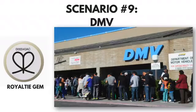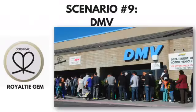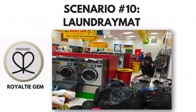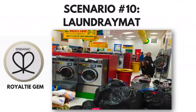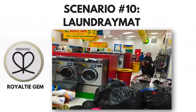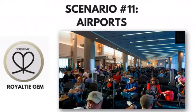The Department of Motor Vehicles is a great spot — people are standing in line waiting for their number to be called, they're on their phones. Imagine putting your business opportunity in front of those people 100% free with the Royalty Gem. How about laundromats? When people sit at laundromats they're on their phones flipping through YouTube or Facebook — a perfect time to put your company video, your capture page, your Facebook page, or your company website in front of them.